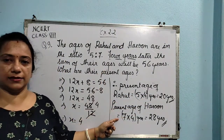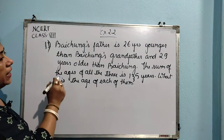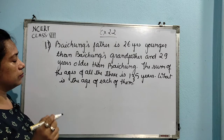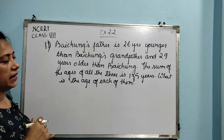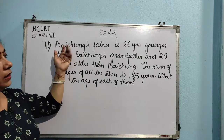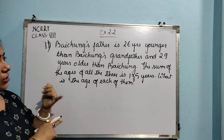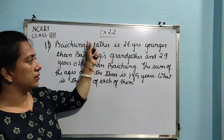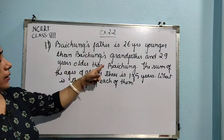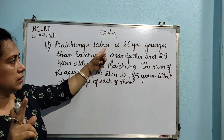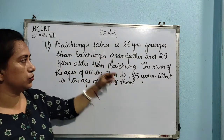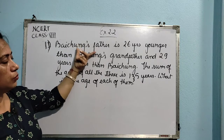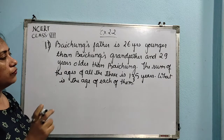So present age of Rahul is 20 years and Haroon is 28 years. Now here is question number 11: Bai Chung's father is 26 years younger than Bai Chung's grandfather and 29 years older than Bai Chung. The sum of the ages of all three is 135 years. What is the age of each of them? The three people are Bai Chung, Bai Chung's father, and Bai Chung's grandfather.